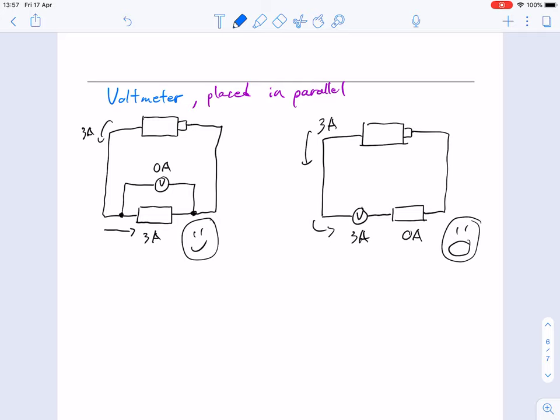Our voltmeter is the opposite. A voltmeter has very high resistance, so current wants to avoid flowing through it. That's exactly what we want. We want to place it in parallel. But if we placed it in series, it's going to take up all the current and not leave anything for our object. That's something we want to avoid.